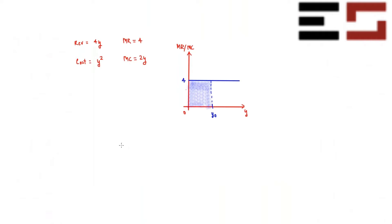Now let me do the same thing with marginal cost. Integrating marginal cost gives you the total variable cost. In this problem there is no fixed cost, so integrating marginal cost from zero to y-naught gives the total cost.